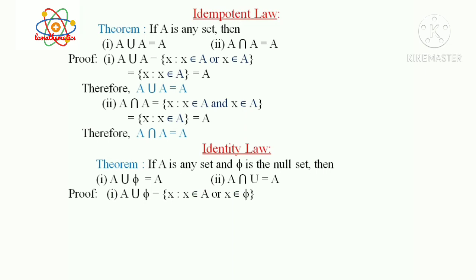Proof of A union ∅: A union ∅ equals {x : x ∈ A or x ∈ ∅}. Since x ∈ A union B means x is in either A or B, and ∅ has no elements, A union ∅ equals A. Therefore A union ∅ equals A.